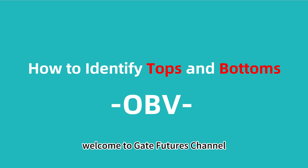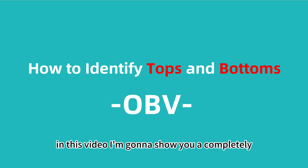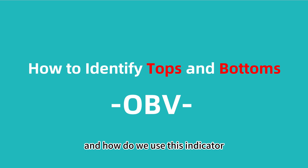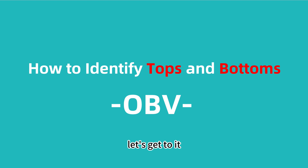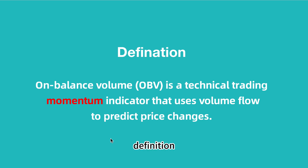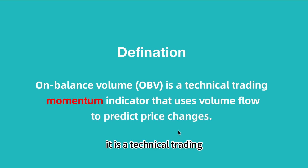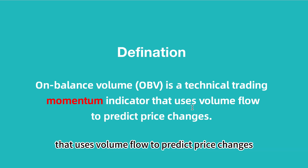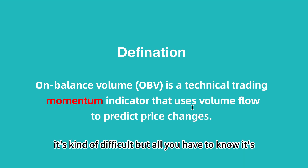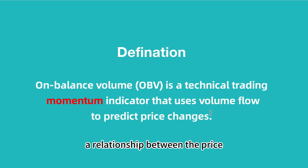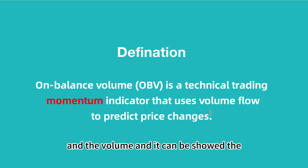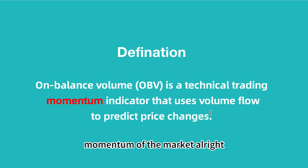Hello traders, welcome to Git Futures channel, this is Chris. In this video I'm going to show you a completely new indicator and how to use it to identify tops and bottoms. The first one — OBV, called On-Balance Volume — is a technical trading momentum indicator that uses volume flow to predict price changes. All you need to know is the relationship between price and volume, and it can show the momentum of the market.